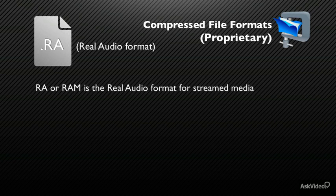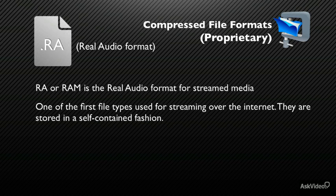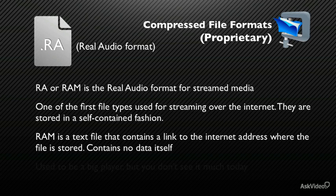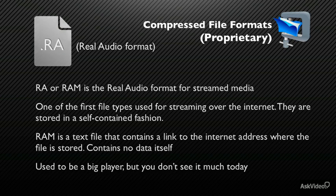RA is the Real Audio format. RA files were one of the first files developed for streaming over the Internet. The RA format allows files to be stored in a self-contained fashion on a computer, with all audio data contained inside the file itself. We should also mention the RAM file (.ram) — this is a text file that contains a link to the Internet address where the Real Audio file is stored; the RAM file contains no audio data itself. Real audio used to be a big player, but you don't see these files around as much these days.